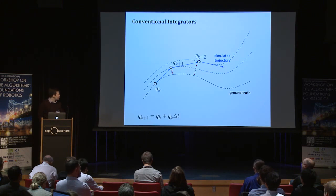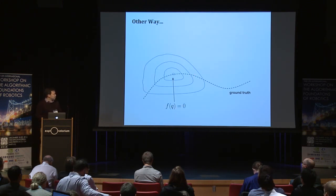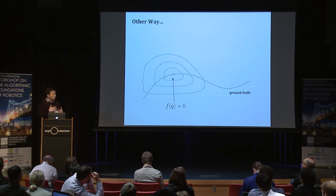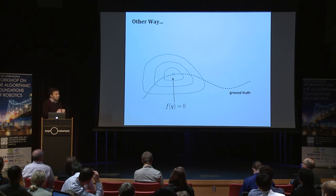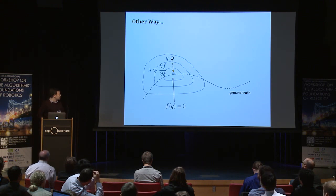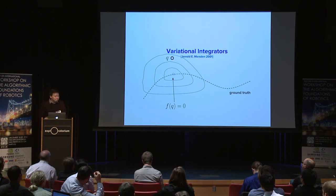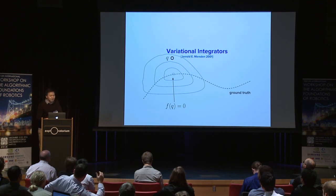I wondered if we could have some magical function that, given a configuration, tells us whether it is in a physically meaningful place or not. If it is not, then we can simply project it onto the right place using gradient computation. I thought I could make a contribution here, but as usual, somebody had already done it — about fifteen years ago.